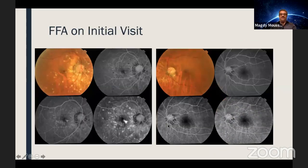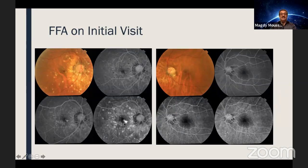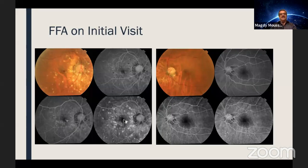The fluorescein angiography shows multiple dots with early hyperfluorescence and late staining. Some are pigmented lesions suggesting they are old lesions. There is another shiny lesion — nasal to the optic disc — showing minimal early hyperfluorescence but very evidently thin. It's a unilateral disease. The diagnosis is obvious — would you agree this is punctate inner choroidopathy based on these criteria? Dr. Amani agrees — this is very classic, in the spectrum of PIC and multifocal choroiditis.